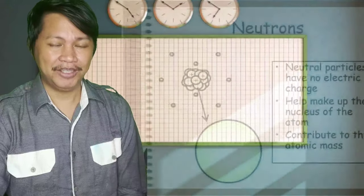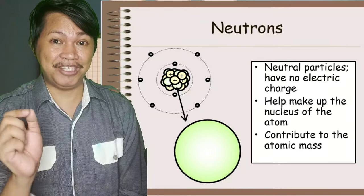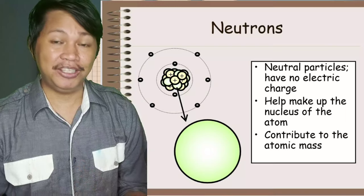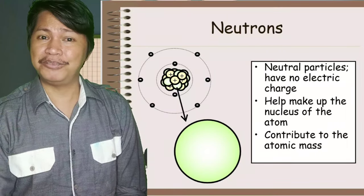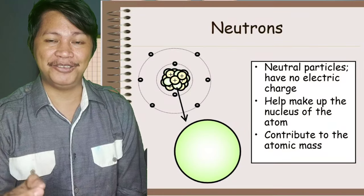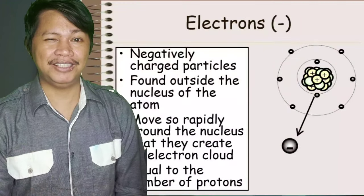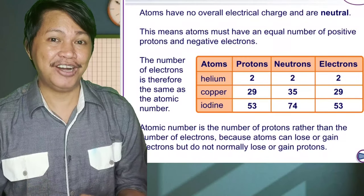The next one is neutron. From the word neutron, it is a neutral particle, so there's no charge at all. It contributes to the atomic mass and it helps also make up the nucleus of an atom. And for the last one we have electrons. This is a negatively charged particle. It is found outside the nucleus and it moves very fast, rapidly.